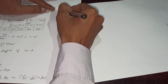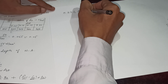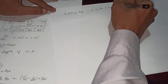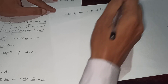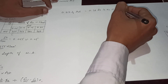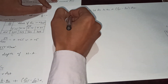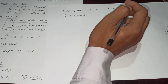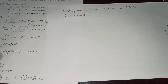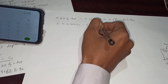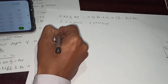Equating Tu with total compressive force: 0.87 × fy × AST = 0.36 × fck × b × XU + (FSC − FCC) × ASC. We substitute all known values. FSC is 355 N/mm² from the table. FCC is computed as 0.446 × fck = 0.446 × 15 = 6.69 N/mm².